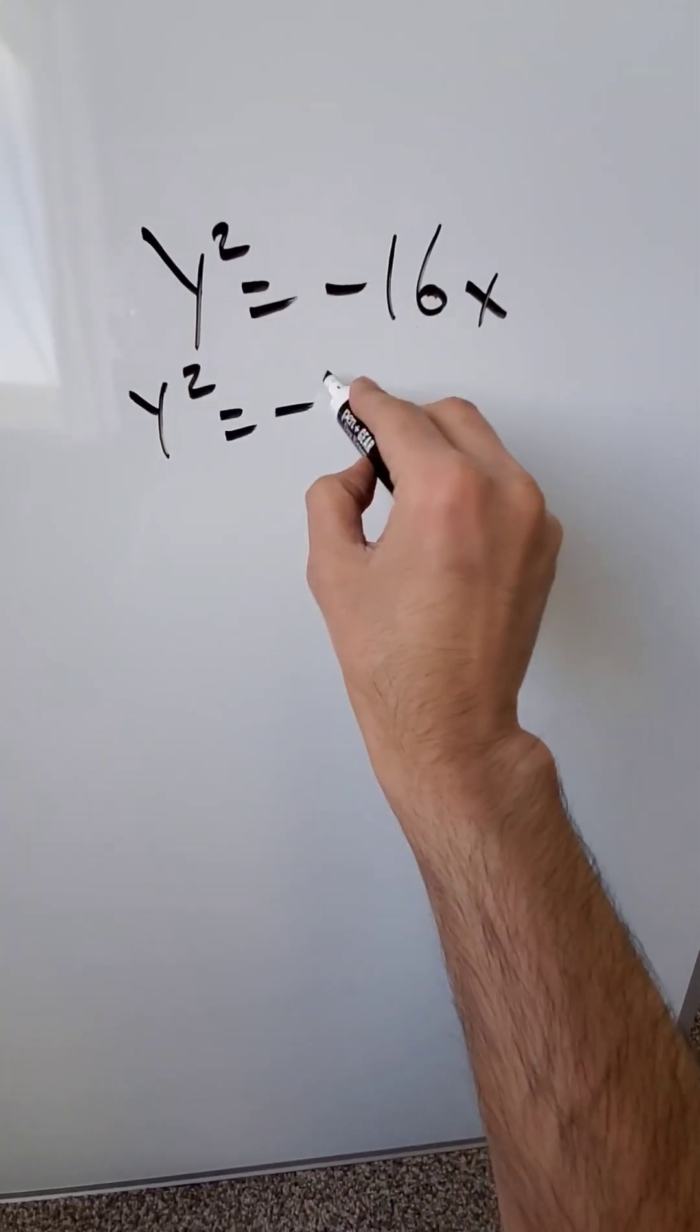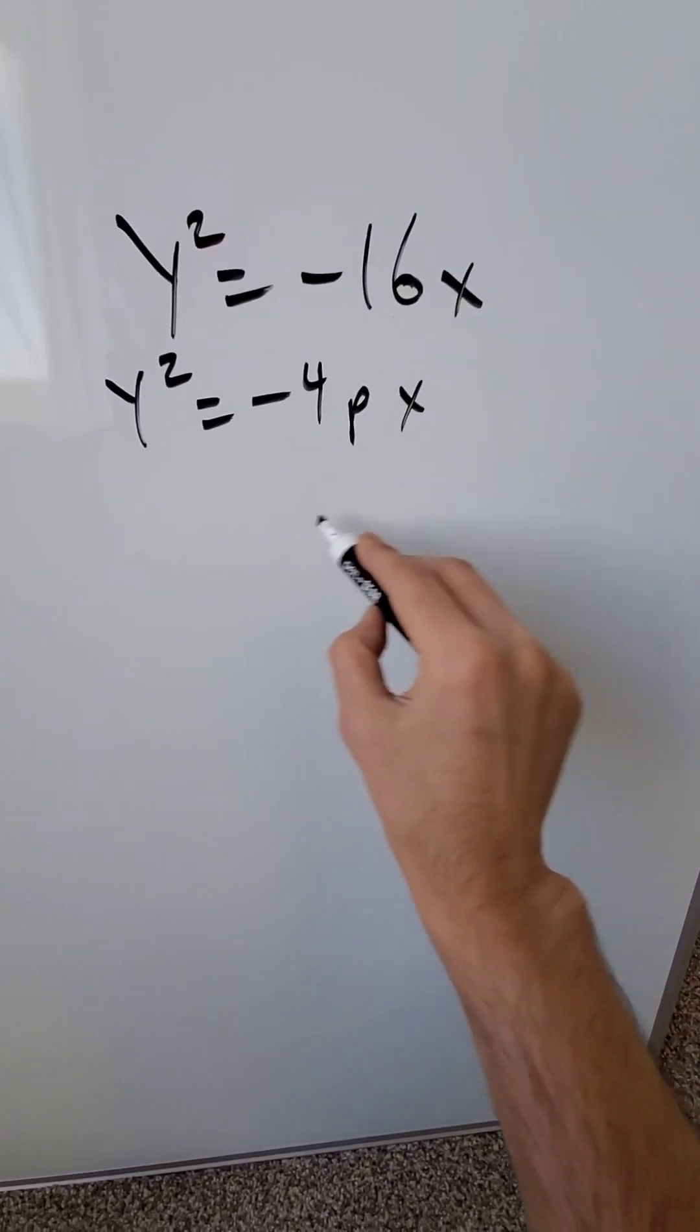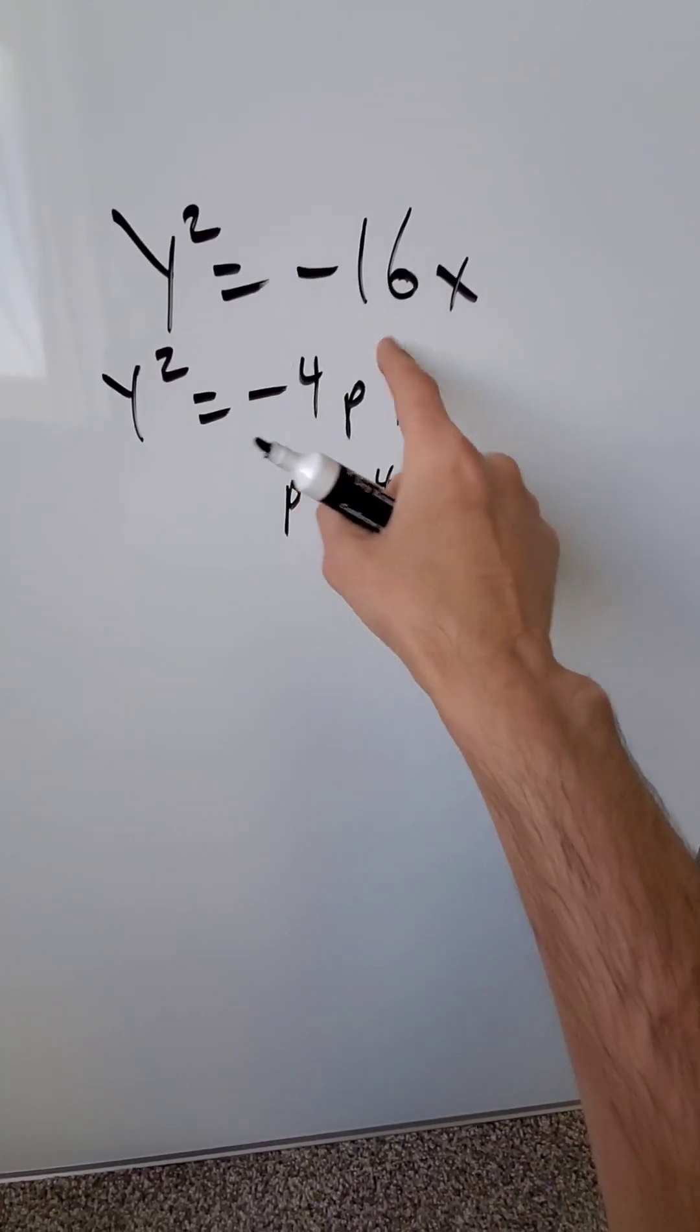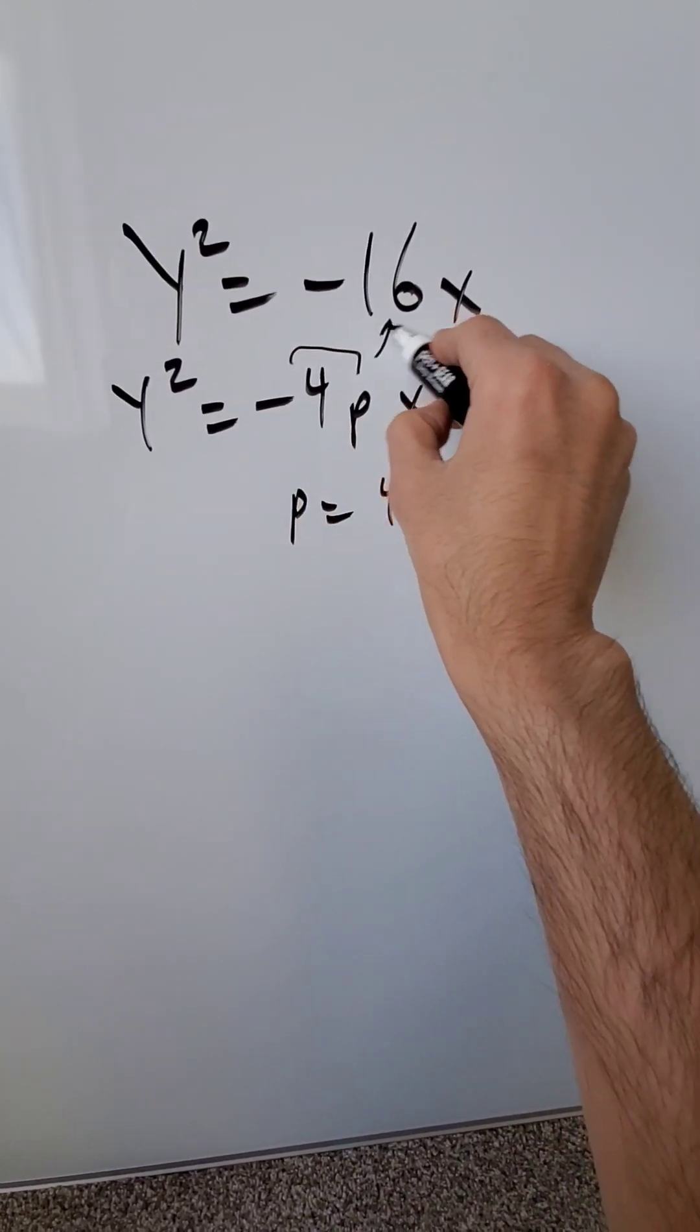We have an equation of this form minus 4 times p times x. p here must be equal to 4 so that these two in their product would give you that 16.